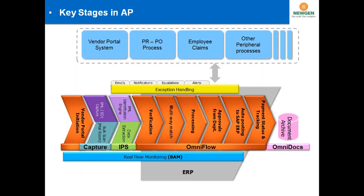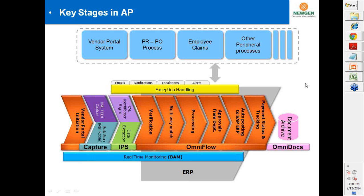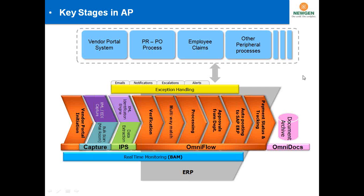A typical AP process end-to-end: invoices initiate through a portal or from multiple sources — electronic or physical. Data is then extracted from those invoices, verified, multi-way matched with ERPs, and processed through departmental approvals before being posted into SAP or other ERPs. Thereafter, payments are tracked, document status updated, documents archived into the DMS repository, and end-to-end reporting generated, along with the ancillary processes discussed in the previous section.